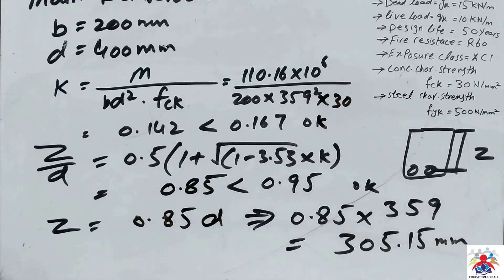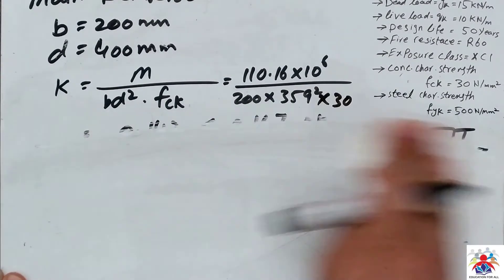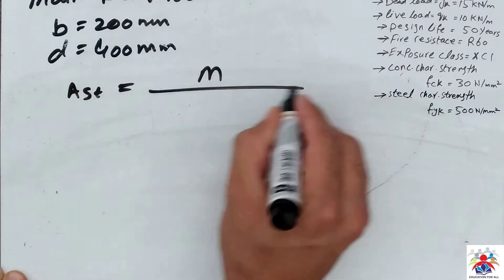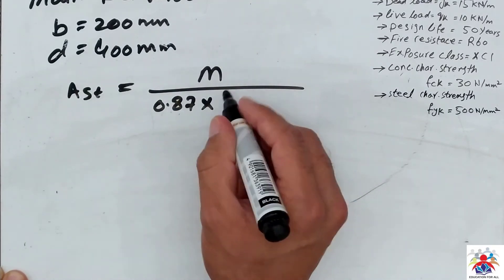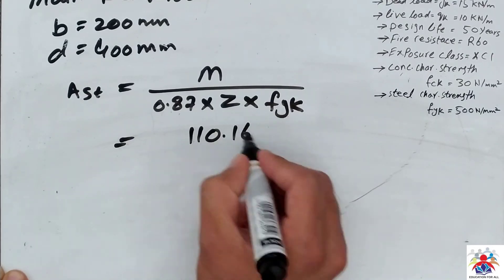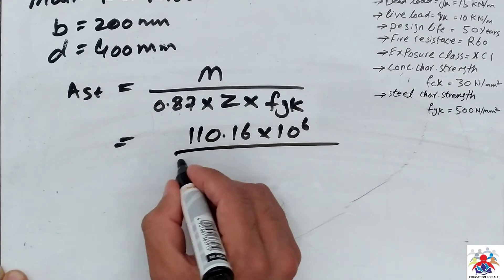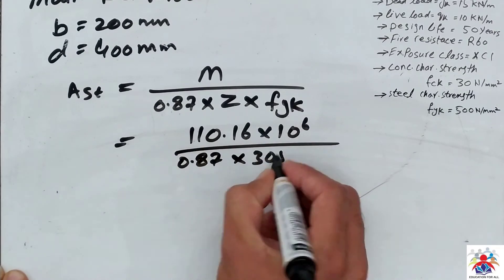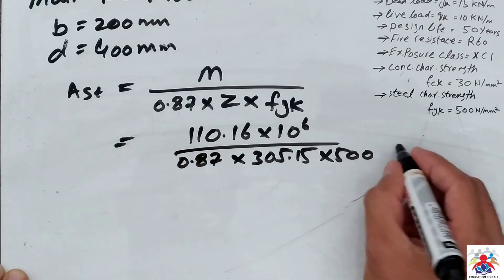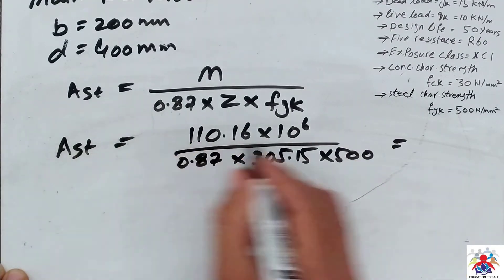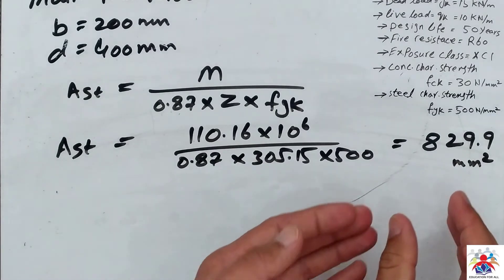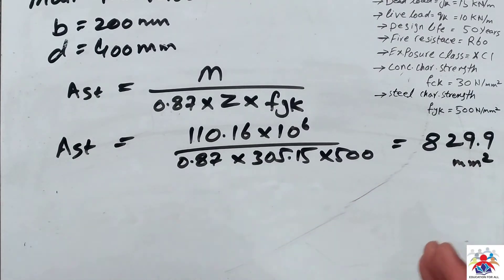Now we have to calculate the area of steel. The formula is: As = M / (0.87 × z × fyk). Substituting: bending moment 110.16 × 10⁶ divided by 0.87 multiplied by 305.15 multiplied by 500. The area of steel we get is 829.9 millimeters squared.